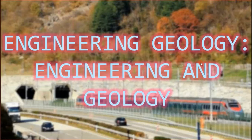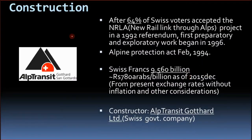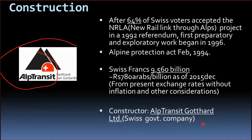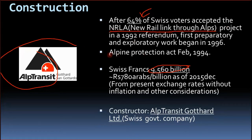Now we come to engineering and geology. The tunnel was built by AlpTransit Gotthard AG, the Swiss government's railway company — similar to Indian Railways in concept. Its cost was around 9.56 billion Swiss francs. It was built following two laws and one referendum, in which 64% of people voted in favour. It began as the New Rail Link through the Alps project. There was also an Alpine Protection Act to preserve the vegetation of the Alps from being cut.